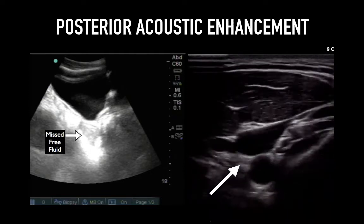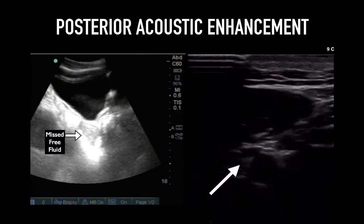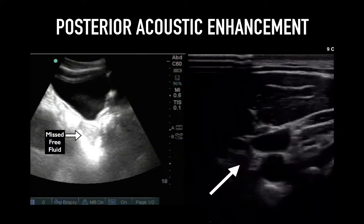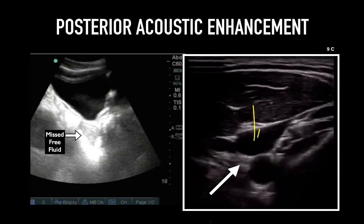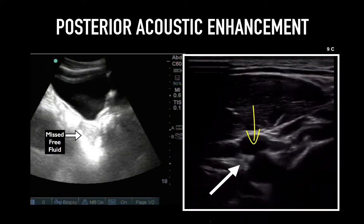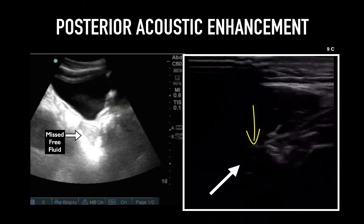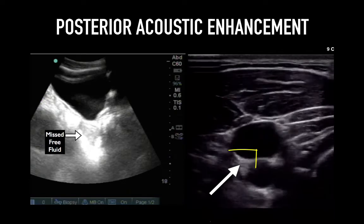This artifact can also hide things, as we see in this longitudinal pelvic view. The image on the right shows the internal jugular vein with increased brightness posterior to it.